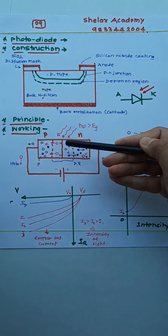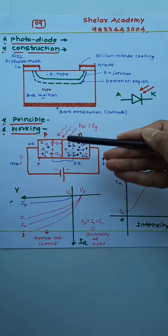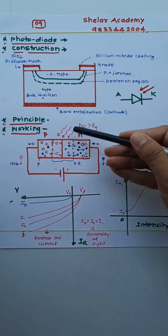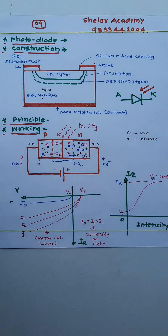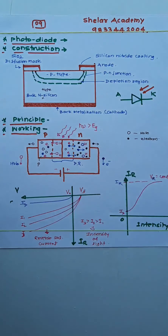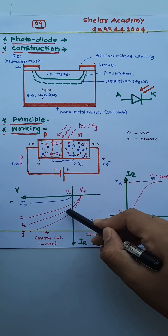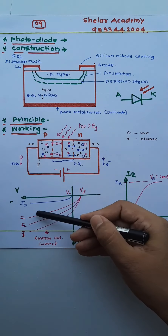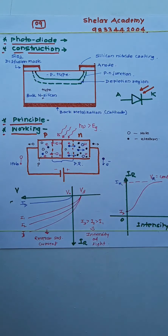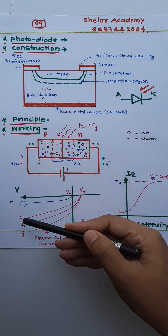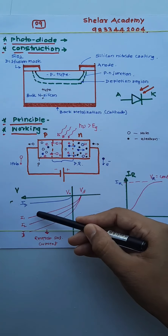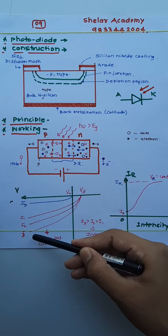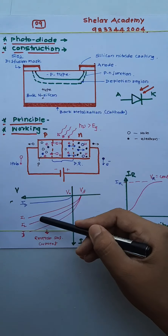If we increase the number of photons incident on the depletion layer — that is, if the intensity of incident light is increased — the formation of electron-hole pairs also increases. Due to that, the reverse saturation current level goes on increasing. These are the graphs at three different intensities of light; as we increase the intensity of incident light, the reverse saturation current level rises.